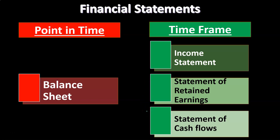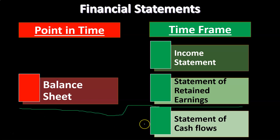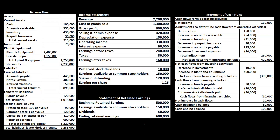Then we're going to have the statement of cash flows, which we'll talk about in a future presentation — also a timing statement. You want to think of these three statements as connected, all as part of the same accrual accounting concept. These three statements will be done first before doing the statement of cash flows, which would then take these statements and convert them from an accrual statement to a cash flow statement.